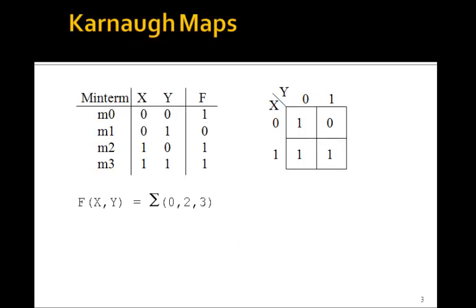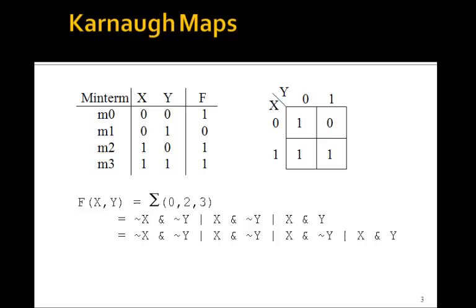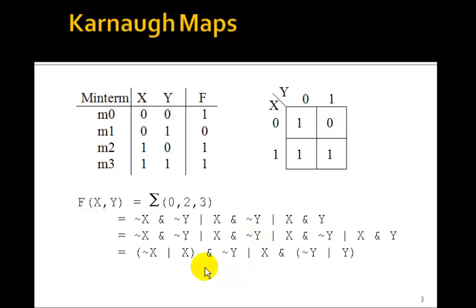We OR all the circles together. This circle covers a 0 and a 1, so x goes away and we're left with not y. So one circle gives x because the 0 and 1 of y go away, and the other circle gives not y because the 0 and 1 of x go away. Let's actually write out these three min terms: not x and not y, or x and not y, or x and y.